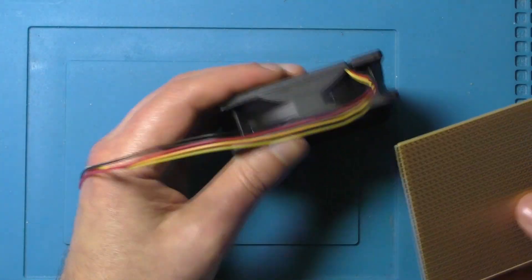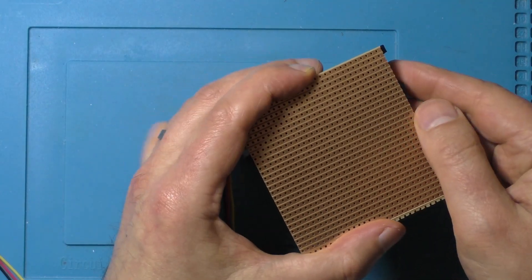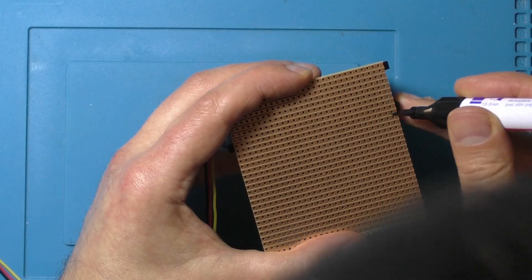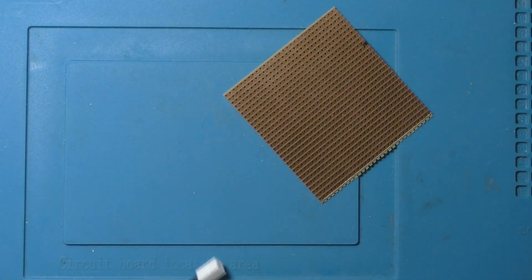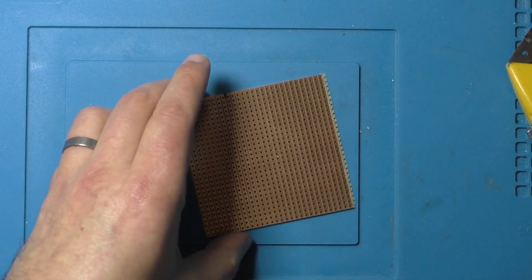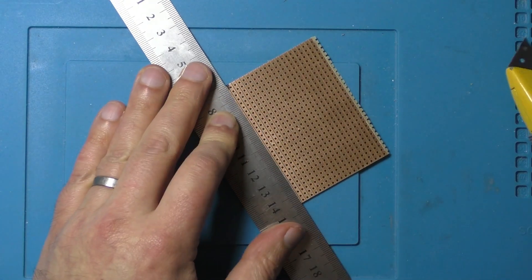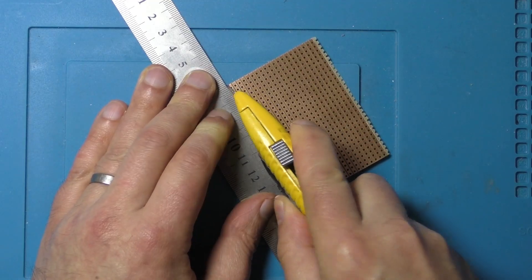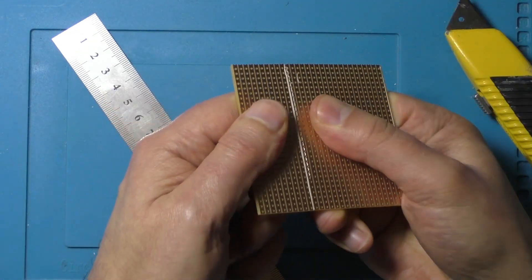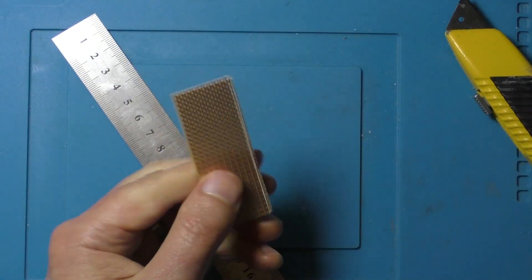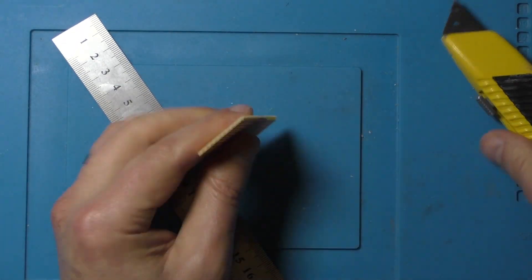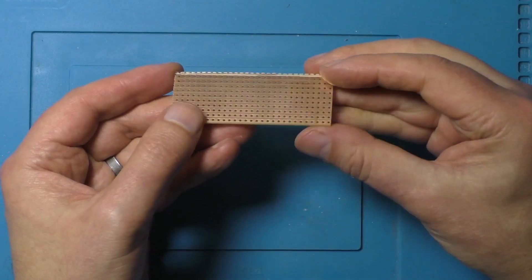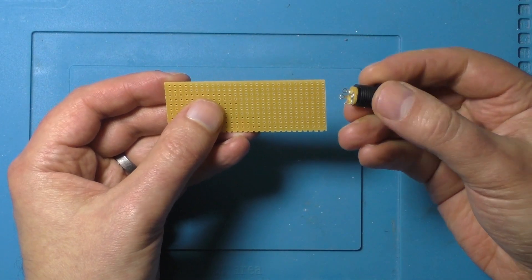So I'm using this Vero board stuff. I quite like this for projects. It's got copper strips that run along it so you don't have to connect everything with wires. You can just plan out what components are connected to each other via the copper strips that run along it. I've cut a piece to fit along the side of the fan.